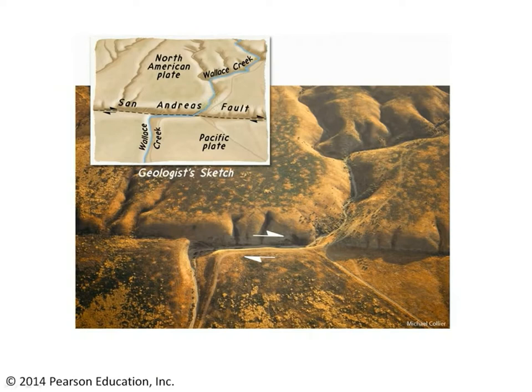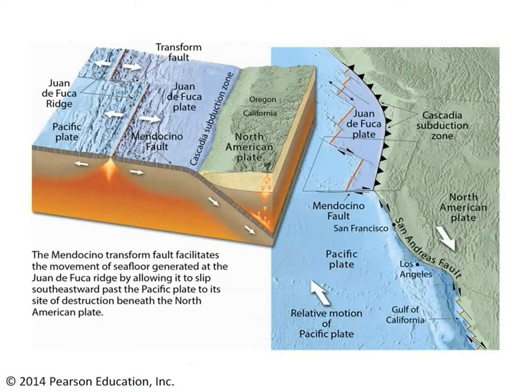So if we're standing on the Pacific plate side, as this picture shows, we've got Wallace Creek over here on the left. It picks up on the North American plate side to the right. Now if we follow the San Andreas Fault up to where it runs offshore at Cape Mendocino, we see that there's another transform fault there.